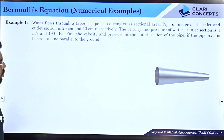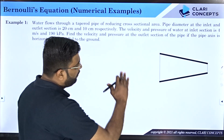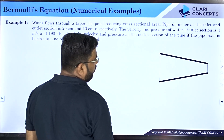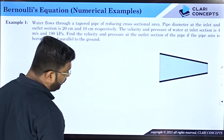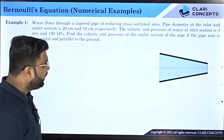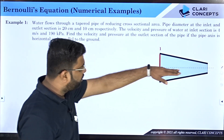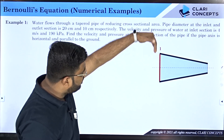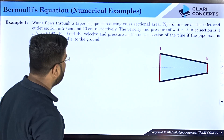Let me draw the sectional view. I can see a cross-section of the pipe with fluid flowing through it. This is the centroidal axis, the center axis of the pipe. Let us mark the inlet section as 1 and the outlet section as 2.